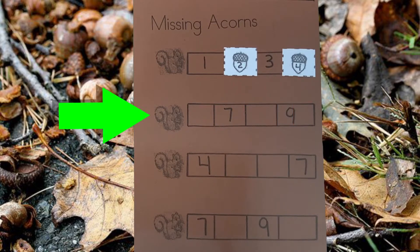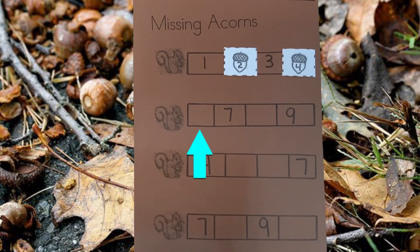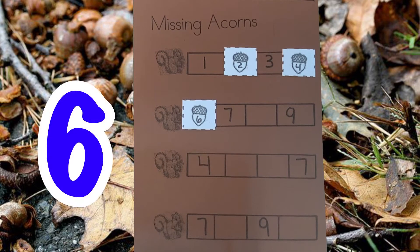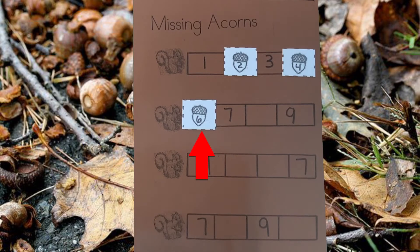Now let's help the second squirrel find his acorn. The first number is empty and the second number is 7. What comes before 7? It's the number 6. 6 comes before 7. 6, 7.